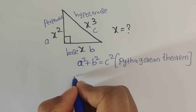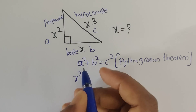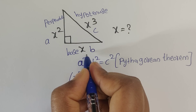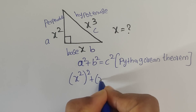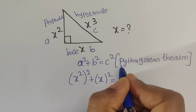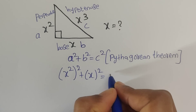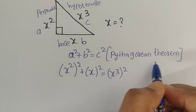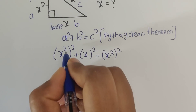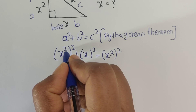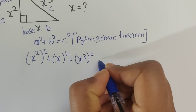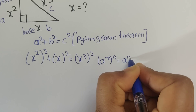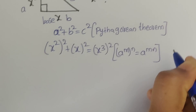Now we use this formula. What is the a value? It is x squared, so a equals x to the power of 2. What is the b value? It is x, so b equals x to the power of 2. And the c value is x cubed, so c equals x cubed to the power of 2. This is the Pythagorean theorem formula applied here.